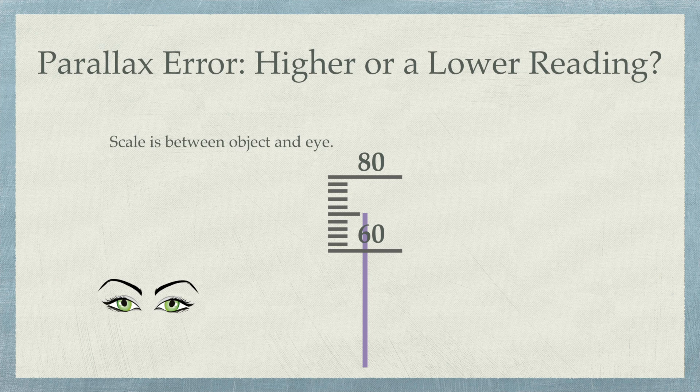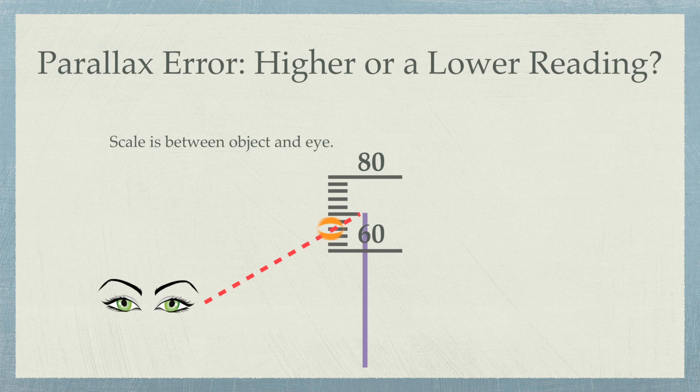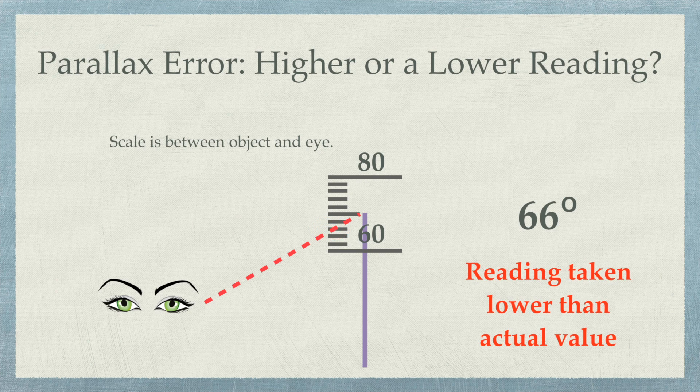To find the answer, you again have to draw the line of vision. If you look at your diagram, the line of vision crosses at the 66 degree mark. Now, this gives you a lower value than the actual value.